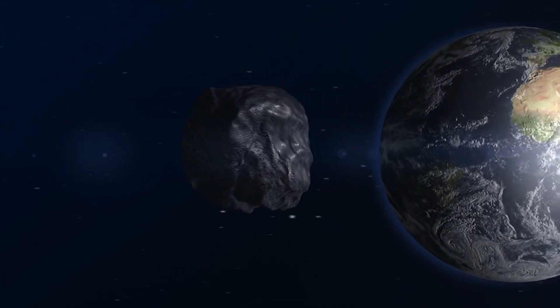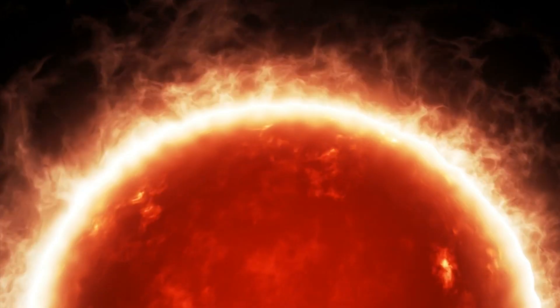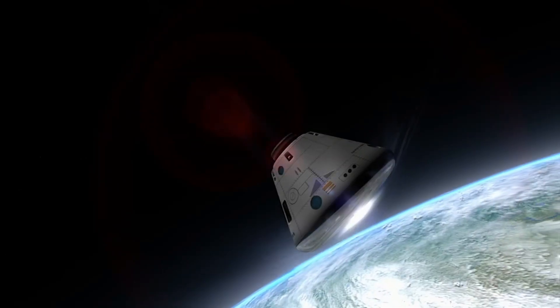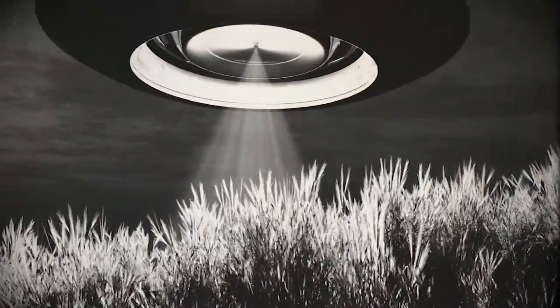But we still need to know what the atmosphere of Ross 128b is like. Depending on its composition and the reflectivity of its clouds, the exoplanet may be life-friendly with liquid water as the Earth, or sterile like Venus.